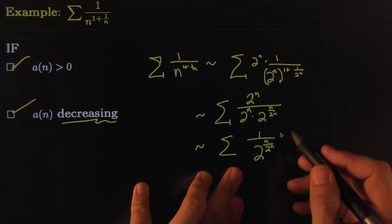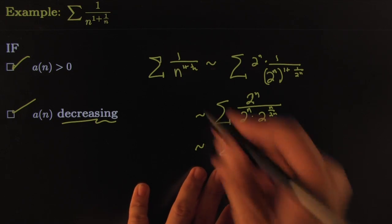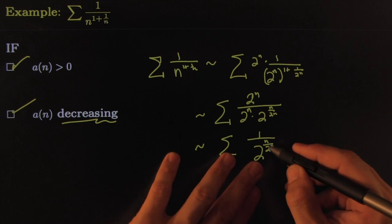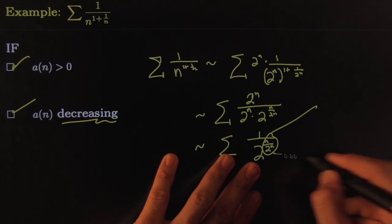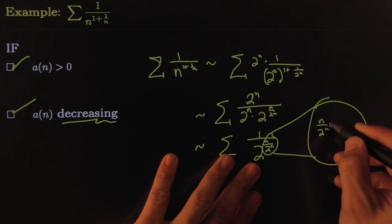All right, so the original one behaves just like this one. Now on this one, you've got an exponent where maybe we can do a little bit of analysis.